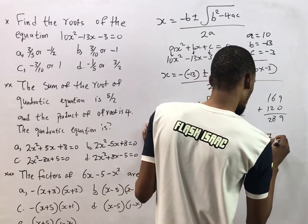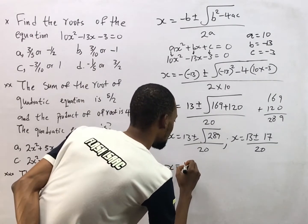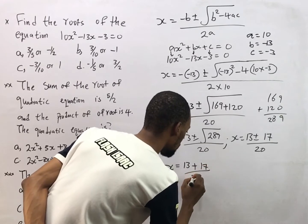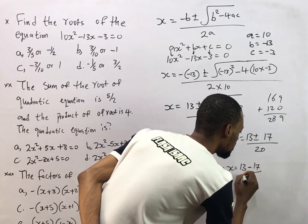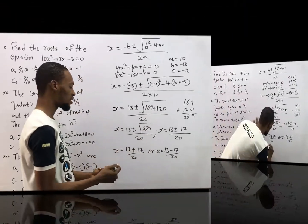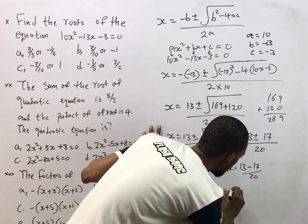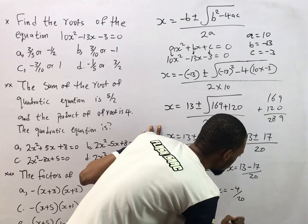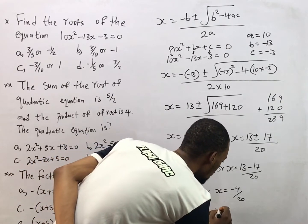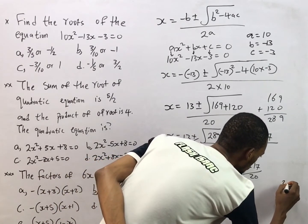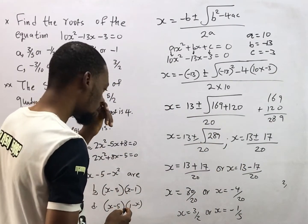So s equals 13 plus or minus the square root of 289, which is 17, over 20. That gives us s equals 13 plus 17 over 20, or s equals 13 minus 17 over 20. So s equals 30 over 20, which simplifies to 3 over 2, or s equals negative 4 over 20, which simplifies to negative 1 over 5.